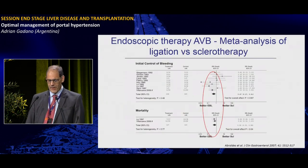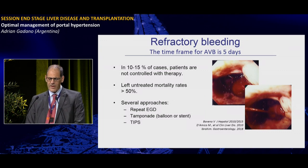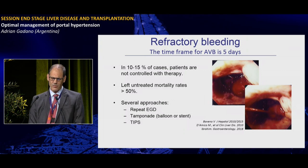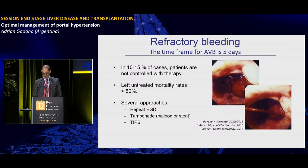Band ligation is superior to sclerotherapy and is the recommended endoscopic treatment. Despite vasoactive and endoscopic treatment, about 15-20% of patients will continue bleeding with very high mortality. Options for these patients include repeat endoscopy, balloon tamponade, endoscopic stents, or placement of a TIPS.